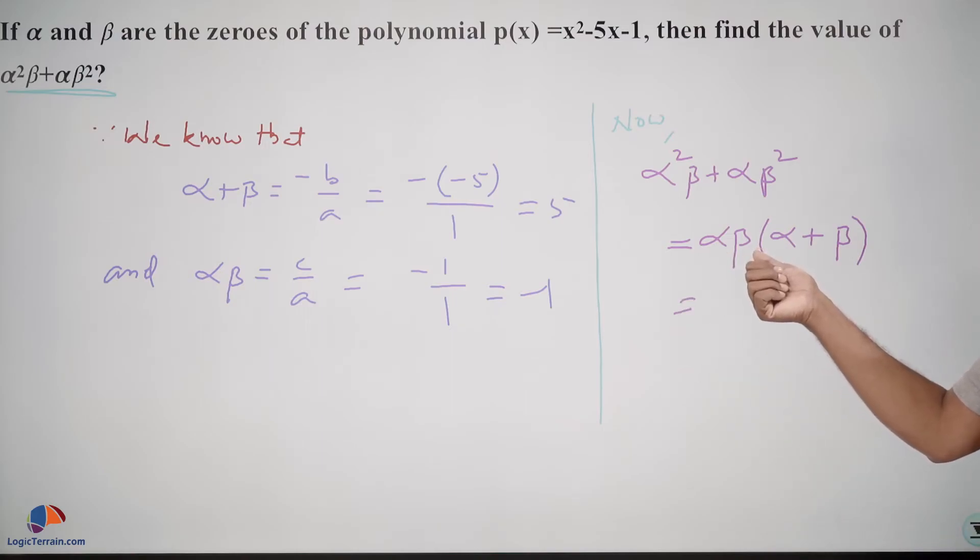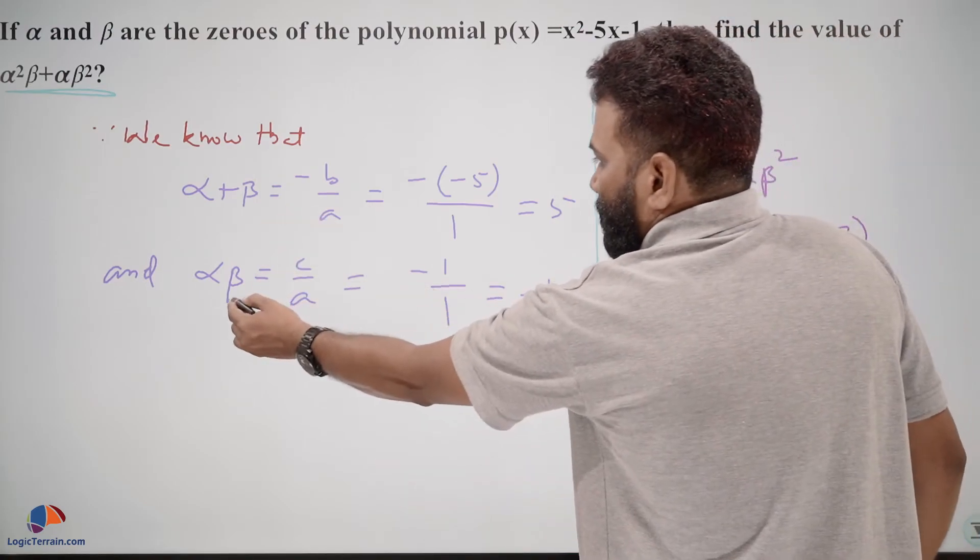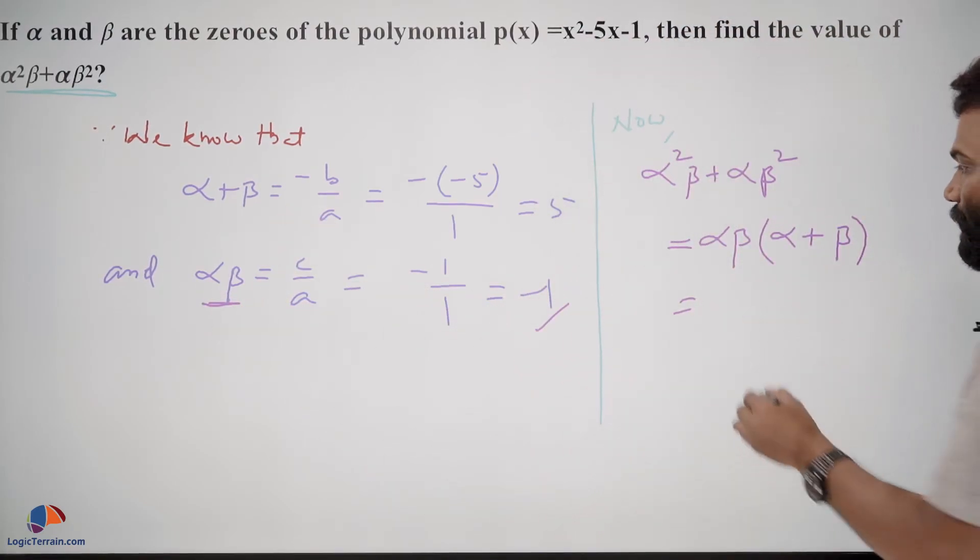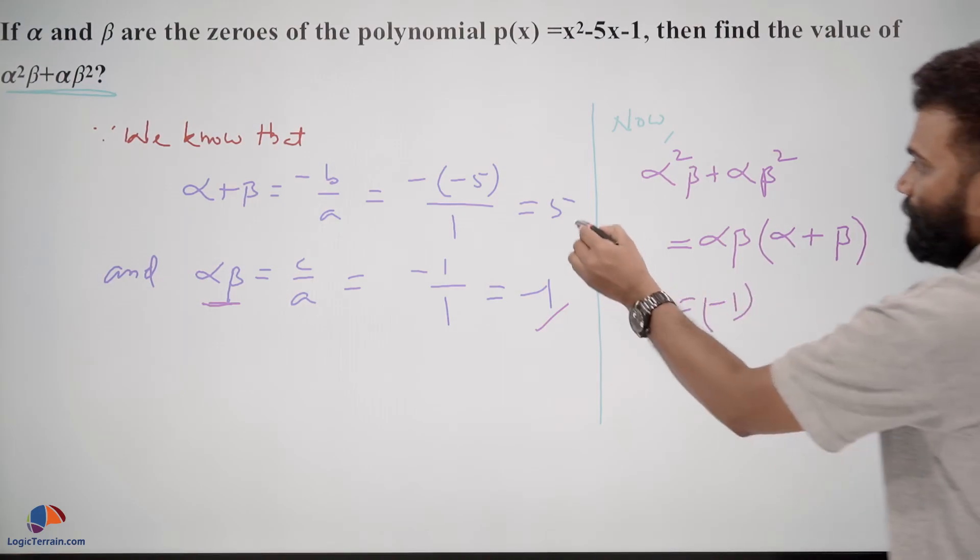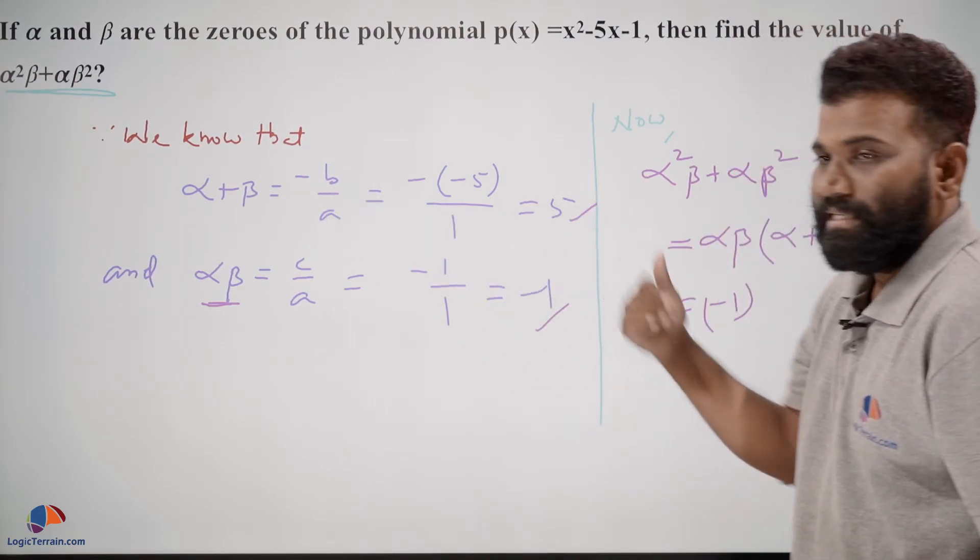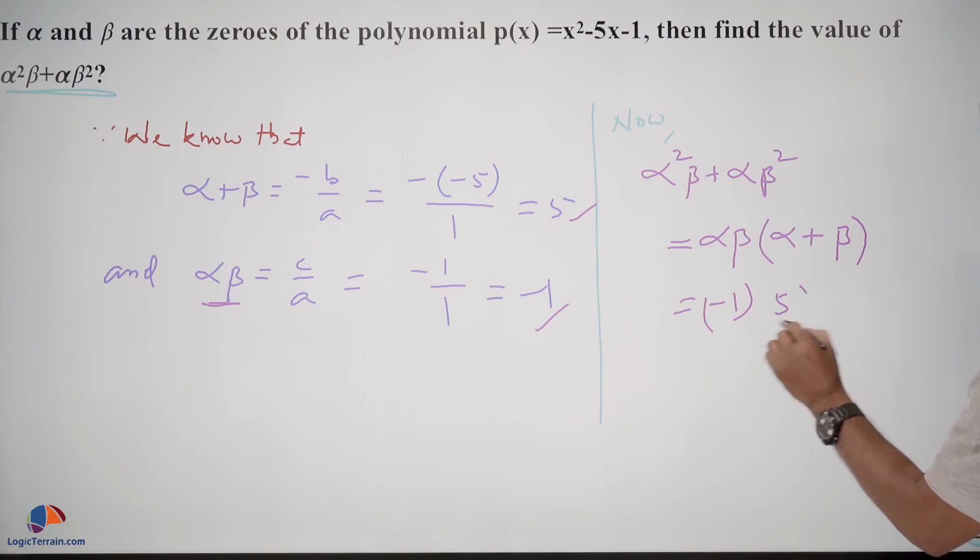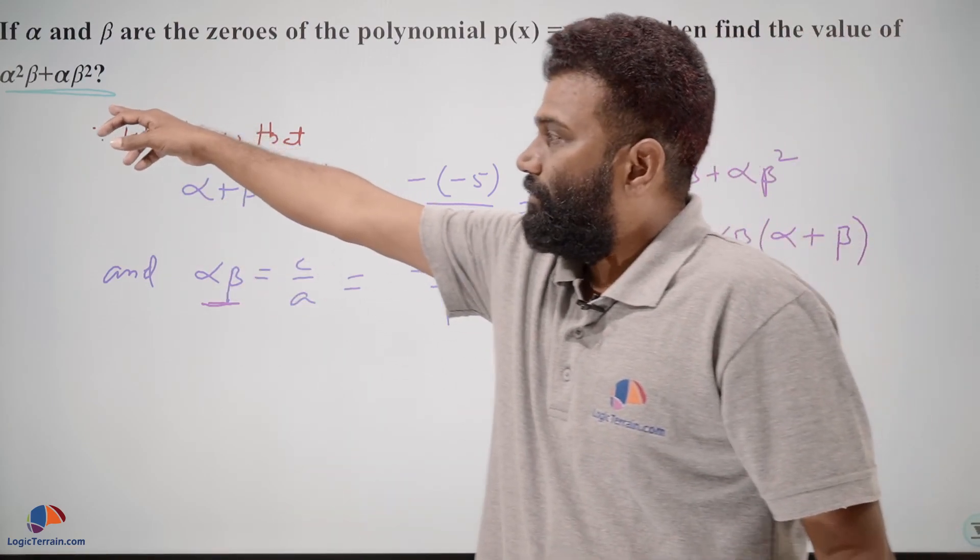From here, αβ is -1, and α + β is 5. When you multiply this, this becomes -5. Therefore, the required solution is -5.